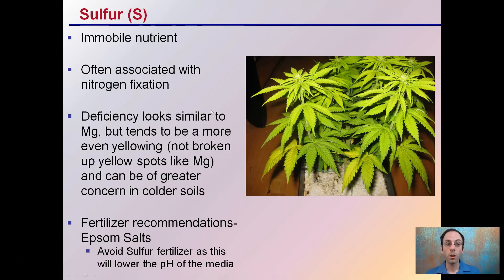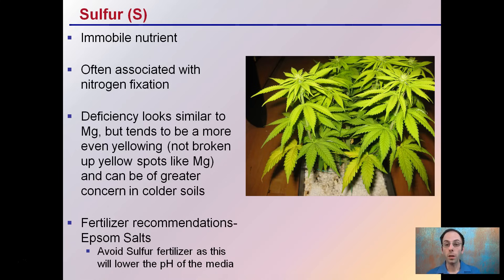Sulfur is an immobile nutrient often associated with nitrogen fixation in the plant. Deficiencies look similar to magnesium but tend to be a more even yellowing — not broken up yellow spots like with magnesium — and it can be of greater concern in colder soils in particular. Typically newer growth will show an overall dulling or yellowing coloration. Epsom salts are recommended; you want to avoid adding straight sulfur as this will also change the pH of the growing media.